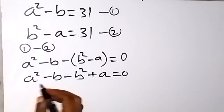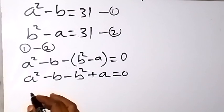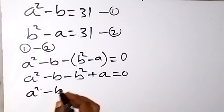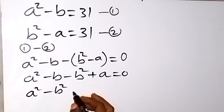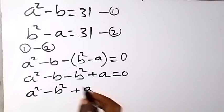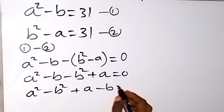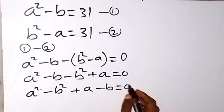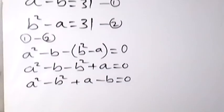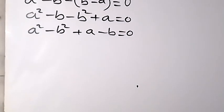We rearrange and bring the squared terms together: a² minus b², then plus a minus b, equals 0. We recognize a² minus b² as the difference of two squares.